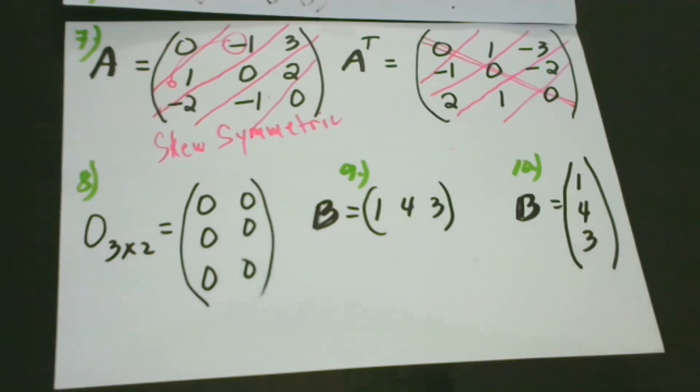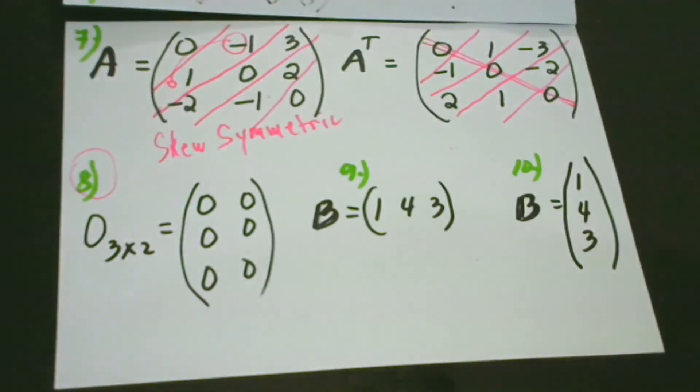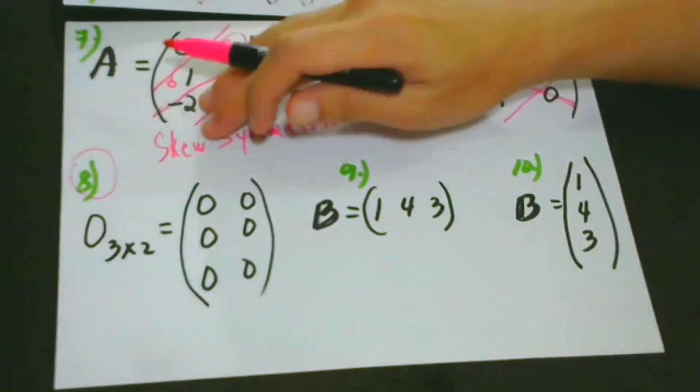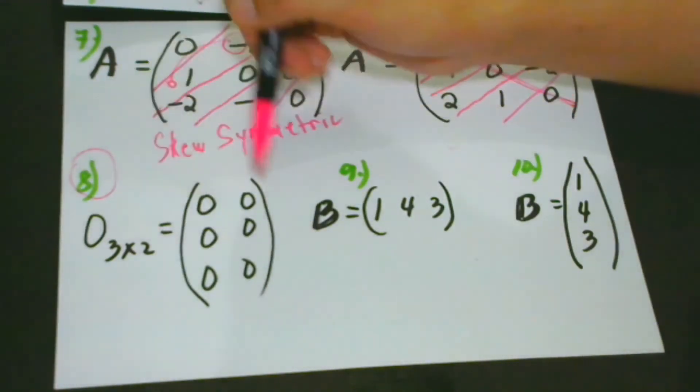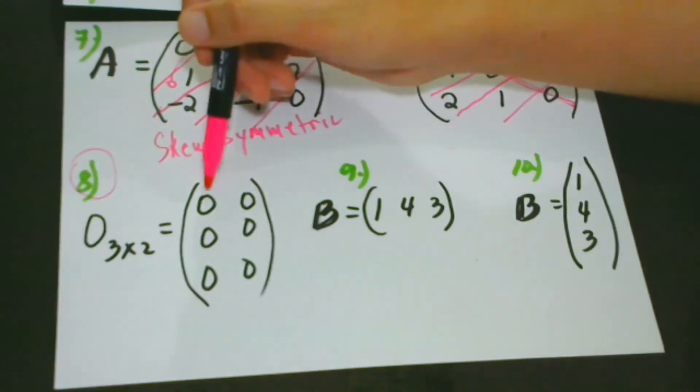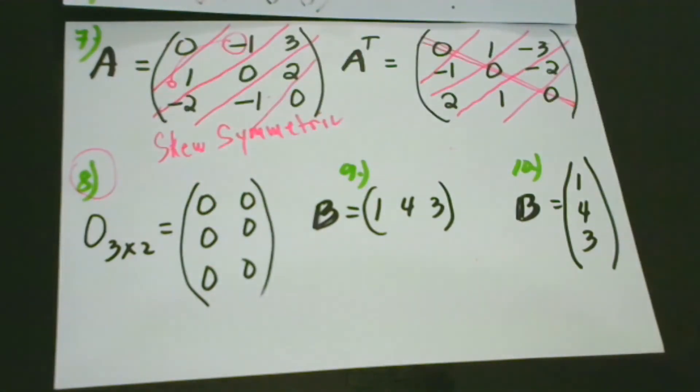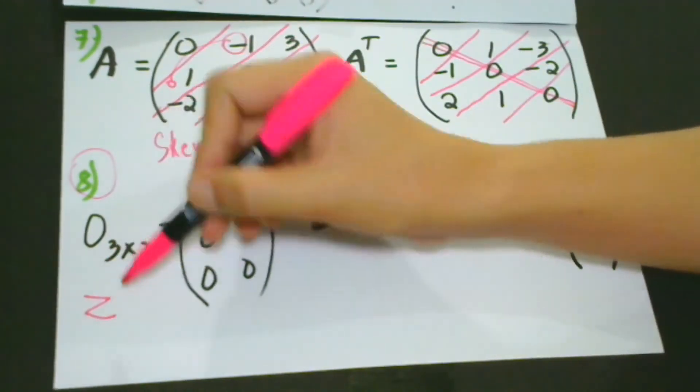The zero matrix is our number eight. What is this? Of course, just by the name itself, it is zero. What can we expect? Always expect that all the values are zero. In this case, we have a three by two matrix. We have three rows and two columns. All are zeros.